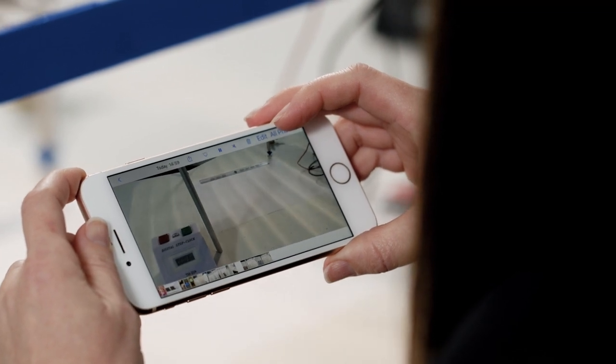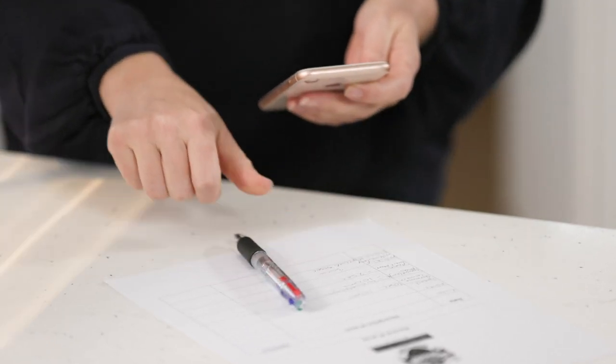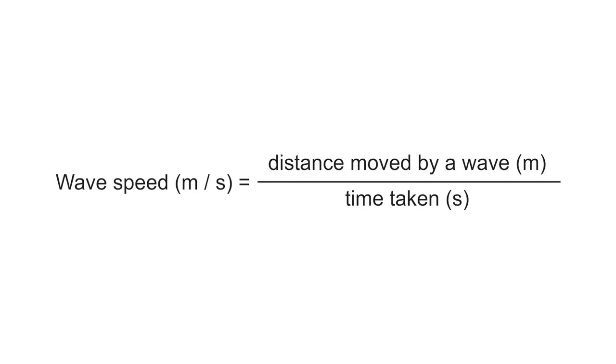Ensure all of your data is in the appropriate results table, remembering to add the correct units to the headings. To work out the speed of a single wave, divide the distance, which in this case is the length of the wave, by the time taken for the wave to pass one point to the next.